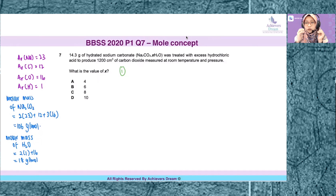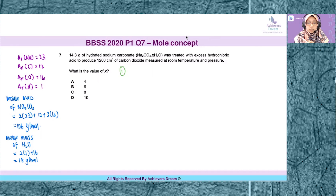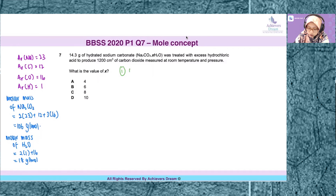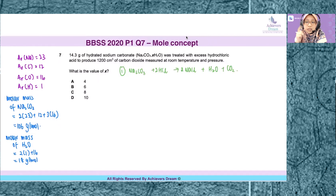This is an example of a very common question asked in exams where students are required to find the number of water molecules present in a hydrated salt. The first step when attempting a mole concept question is to always construct a balanced chemical equation. When sodium carbonate reacts with hydrochloric acid, we get sodium chloride, water, and carbon dioxide gas.